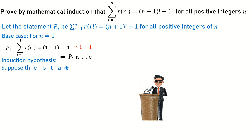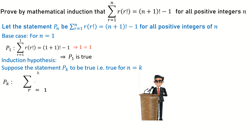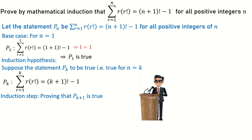Now I introduce my induction hypothesis, which is supposing that the statement P(k) is true — that is, the statement is true for n equal to k. If it is true for n equal to k, the statement P(k) is this statement. Finally, we prove it true for n equal to k plus one, that is the induction step.